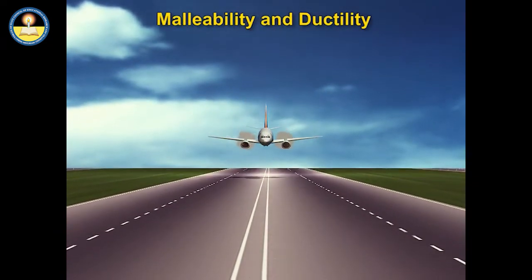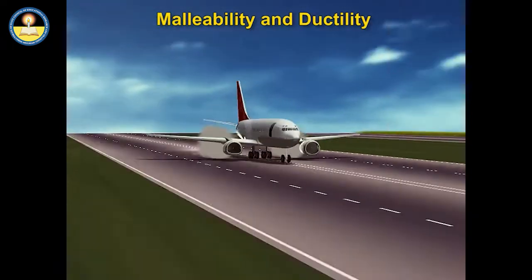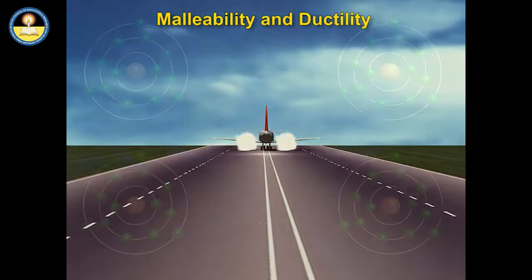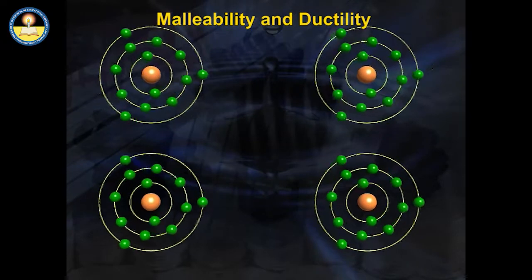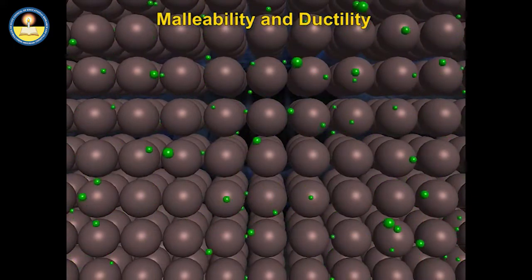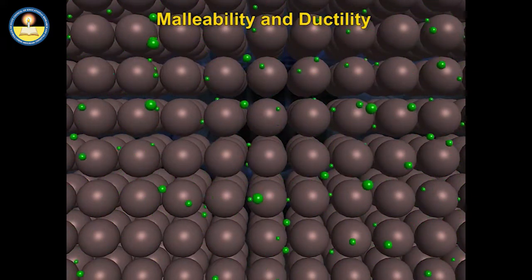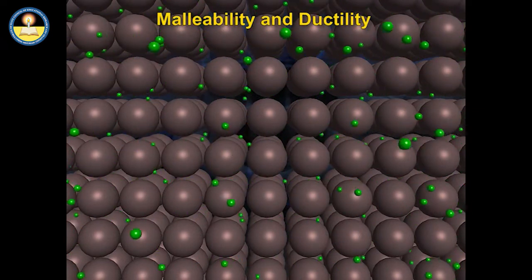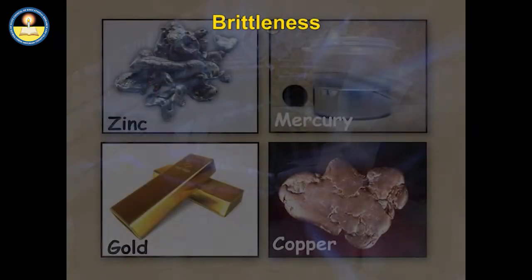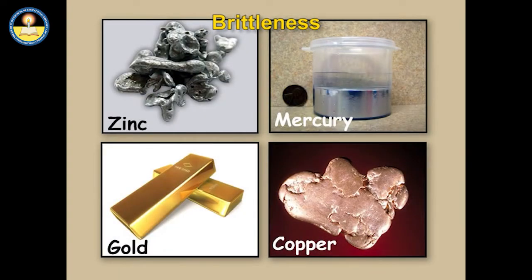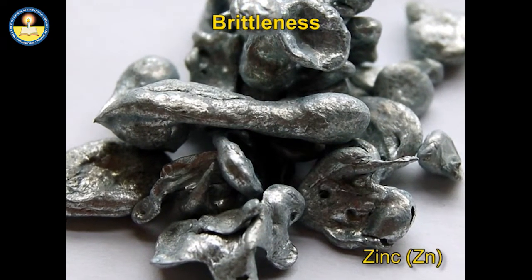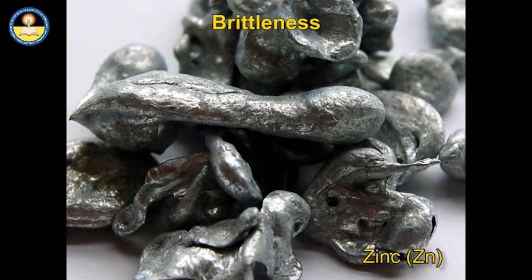Metals are highly tensile. Due to their ductility and malleability, metals are very strong. Their bonds do not break easily as the electrons are shared over an array of metal atoms. This gives metals very high tensile strength so they do not break easily. Metals are not brittle, but zinc (Zn) is an exception. Metals do not break easily because of their metallic bonds.